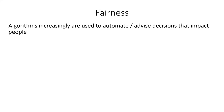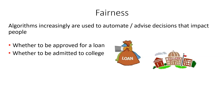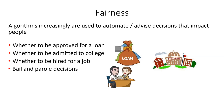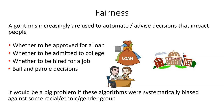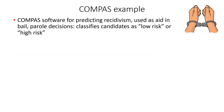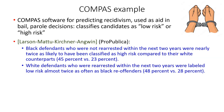A brief introduction to fairness in machine learning: algorithms increasingly are being used to automate or advise decisions that impact people — things like whether to be approved for a loan, admitted to college, hired for a job, or bail and parole decisions. It would be a big problem if these algorithms were systematically biased against some racial, ethnic, or gender group. This really hit the fore with the COMPAS example — software for predicting recidivism used as an aid in bail and parole decisions. It classifies candidates as low risk or high risk. An analysis of data from a county in Florida showed that Black defendants who were not re-arrested within two years were nearly twice as likely to have been classified as high risk compared to their white counterparts.